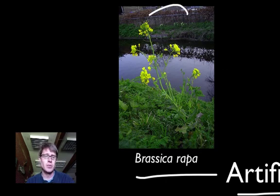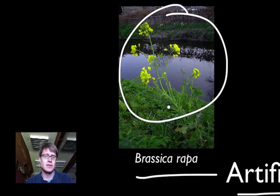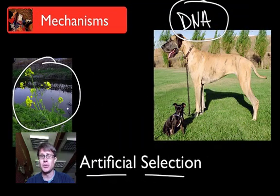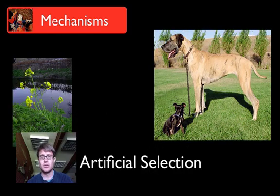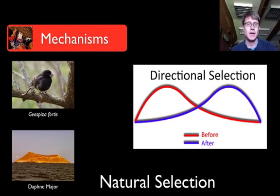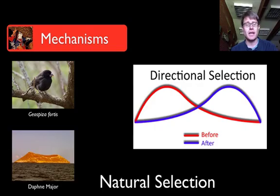Brassica is actually a type of plant that led to a lot of the different foods we have today. In fact, many foods you eat were created through a process of artificial selection. Today, however, I want to spend a lot of time talking about natural selection and the mechanisms by which that occurs.